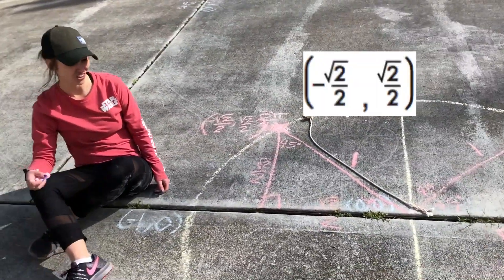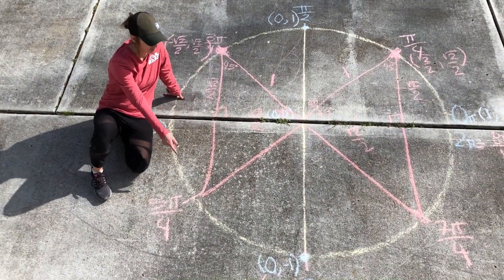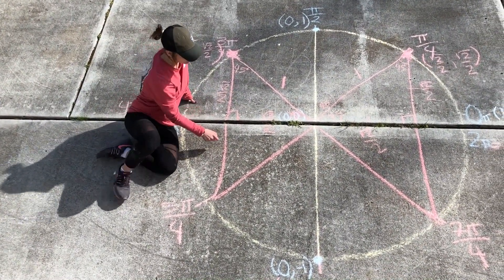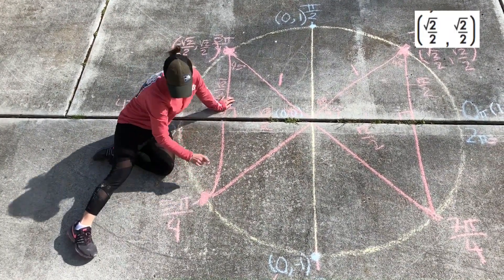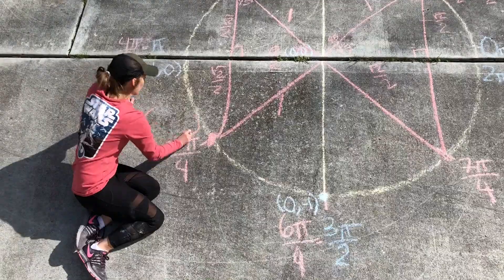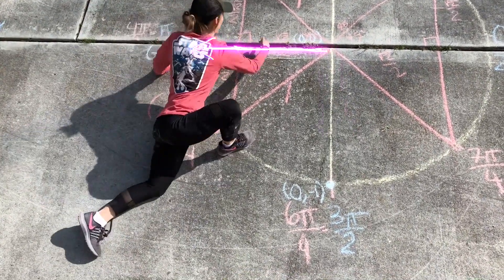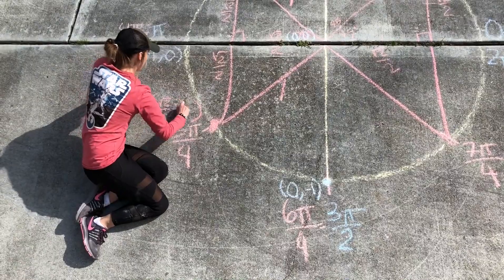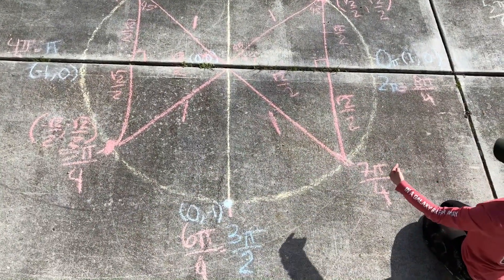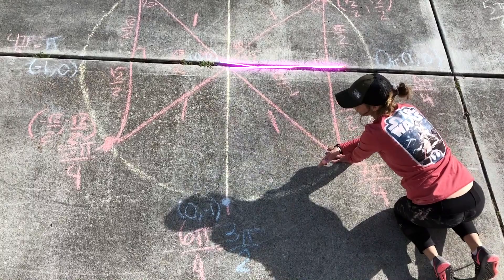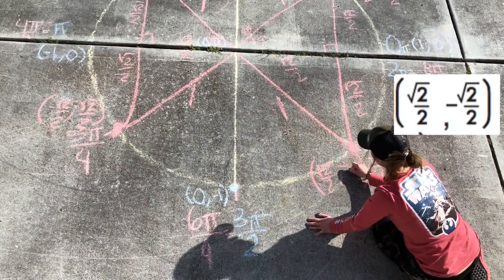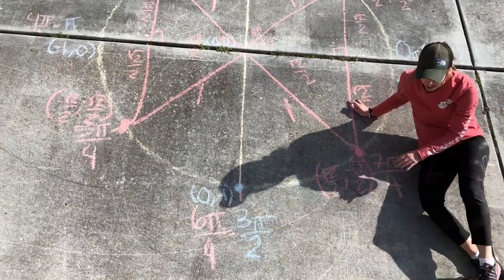I could do this for the rest of my circle. I've drawn in the two other triangles for the remaining 45-degree points. Pause the video and see if you can find the coordinates for 5 pi over 4 and 7 pi over 4. At 5 pi over 4 we're in the third quadrant — negative x and negative y — so (-root 2 over 2, -root 2 over 2). At 7 pi over 4 we're in the fourth quadrant — positive x, negative y — so (root 2 over 2, -root 2 over 2).